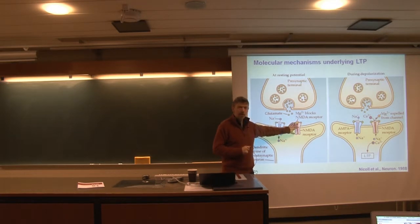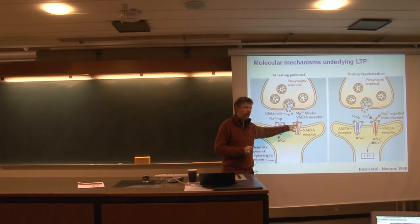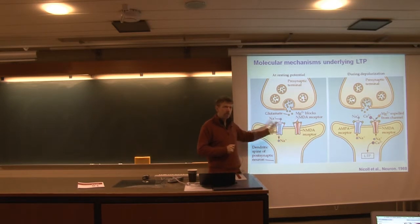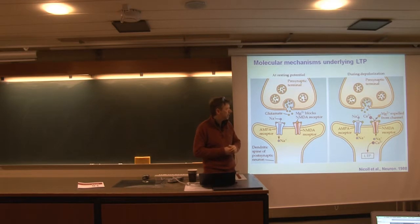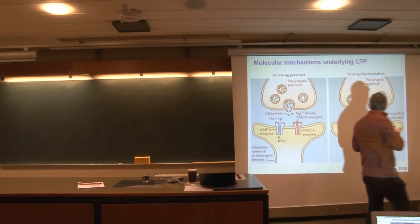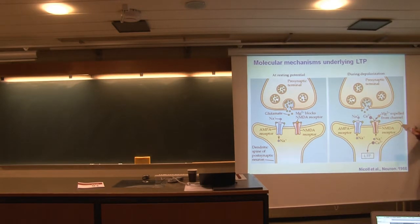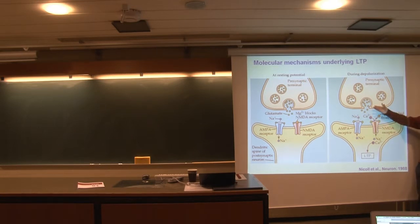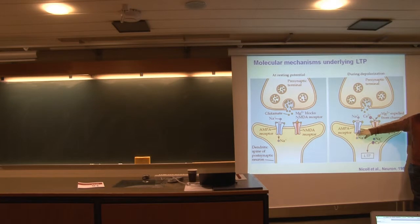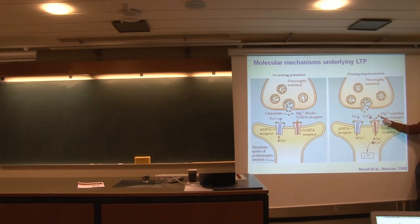The NMDA receptor is normally closed, mainly because there is a magnesium molecule which is blocking the receptor. So under normal circumstances, you only have a normal EPSP caused by sodium flowing into the cell. Now, if you then have a prior depolarization — if you activate the neuron once and then do it once again right afterwards — what you will have is that first you have a depolarization caused by the AMPA channel, and because of that depolarization, magnesium will be removed from the NMDA channel.